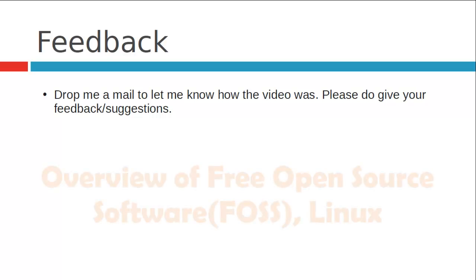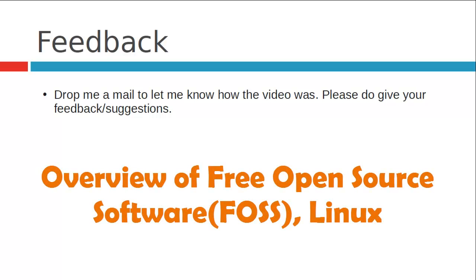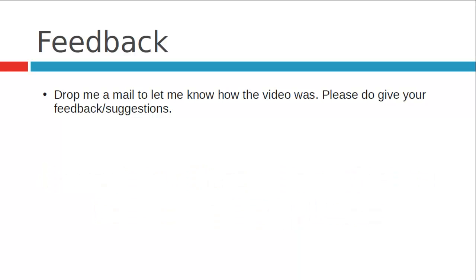Let's first understand what free open source software is. Open source means a software whose source code you can actually see, modify, and compile binaries from — so you can see exactly how the software was made. Free open source software can be used freely, modified, and distributed to other people without paying any licensing fee.